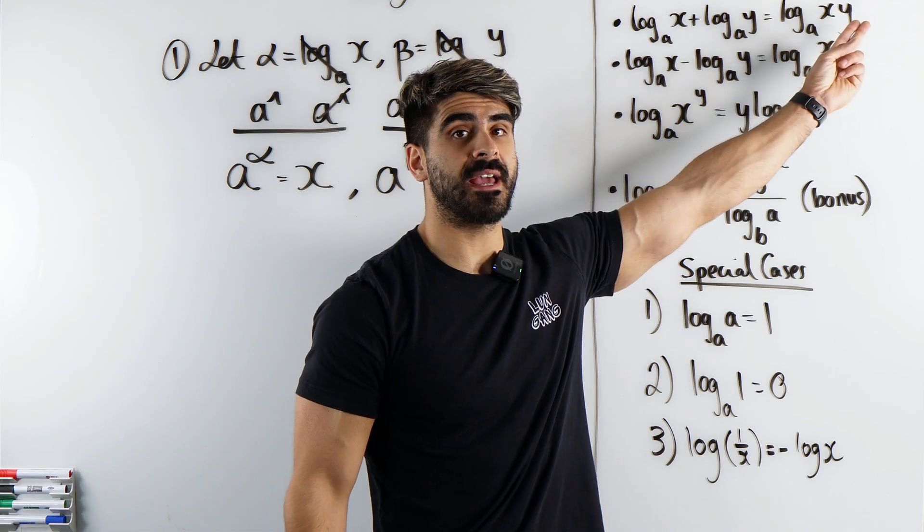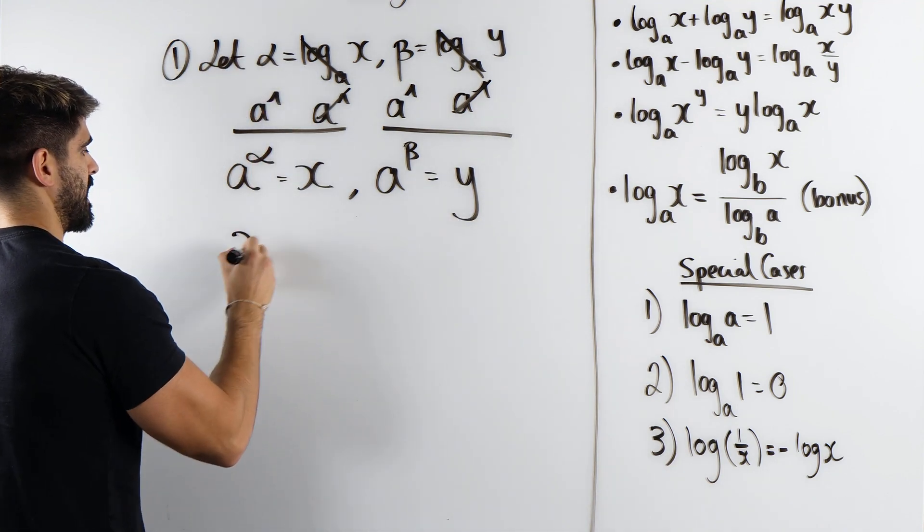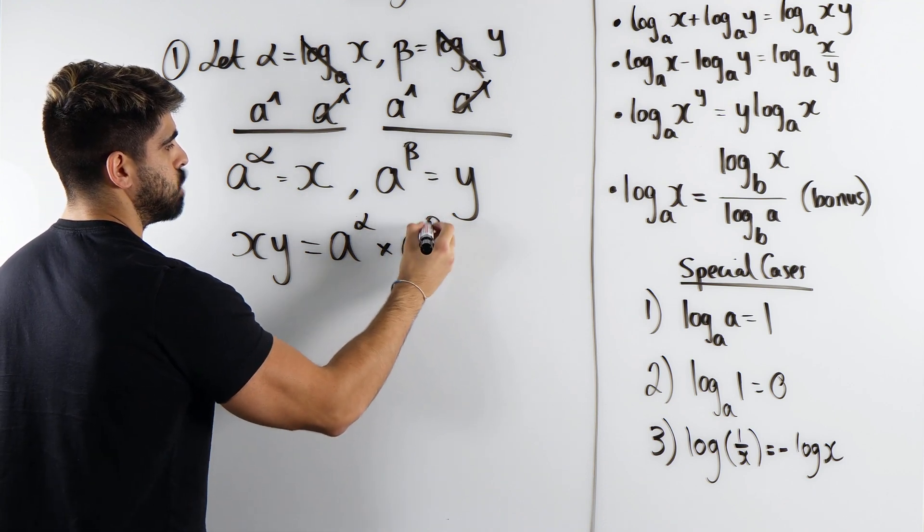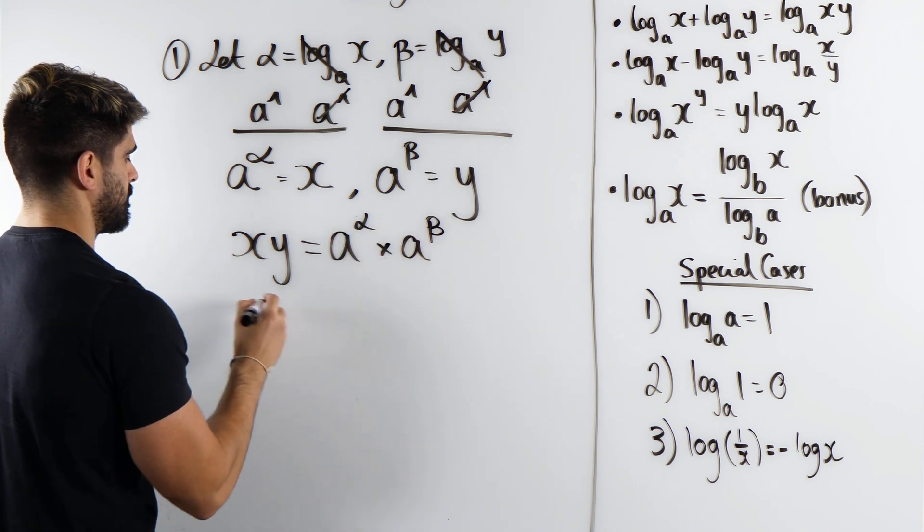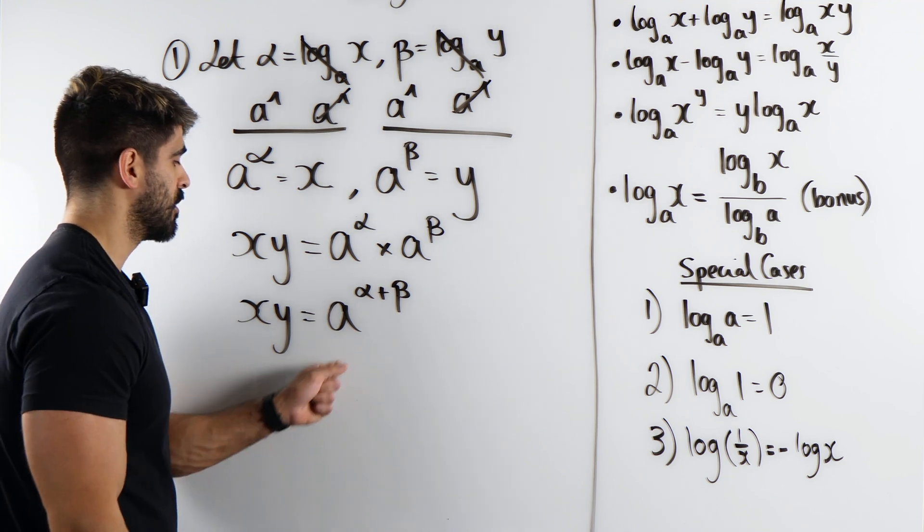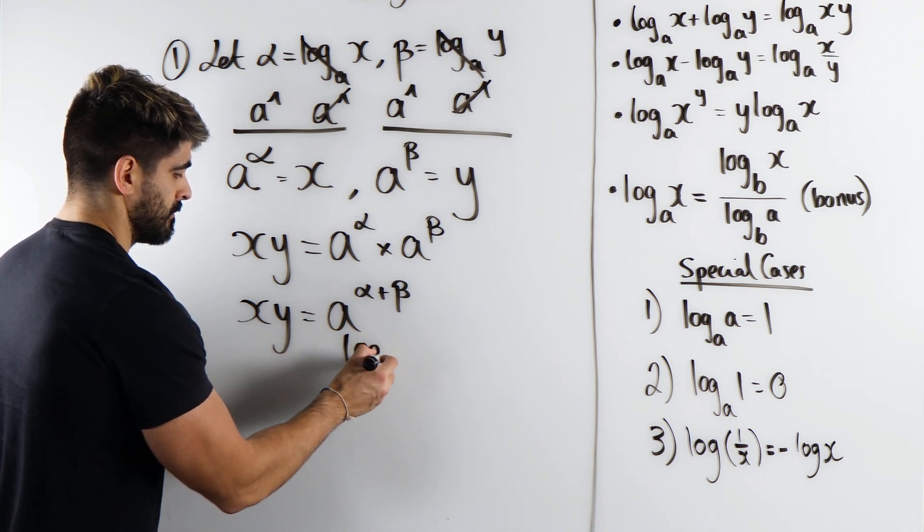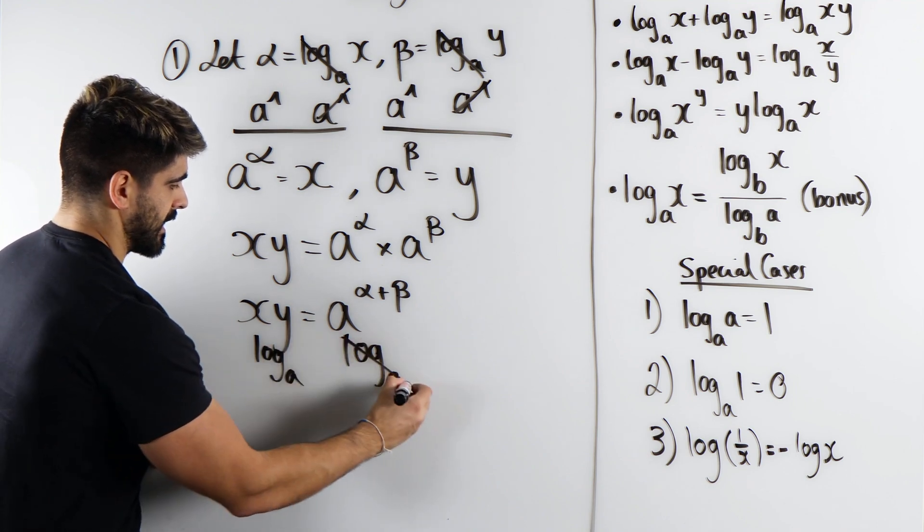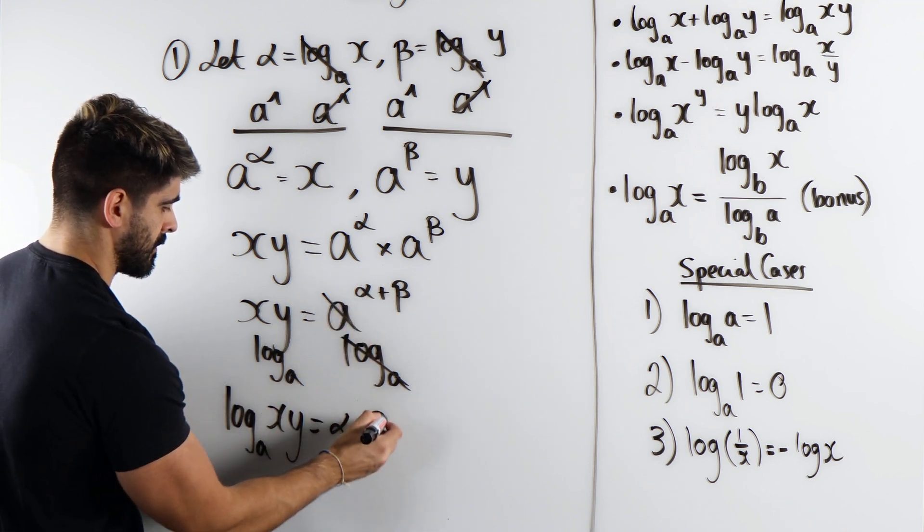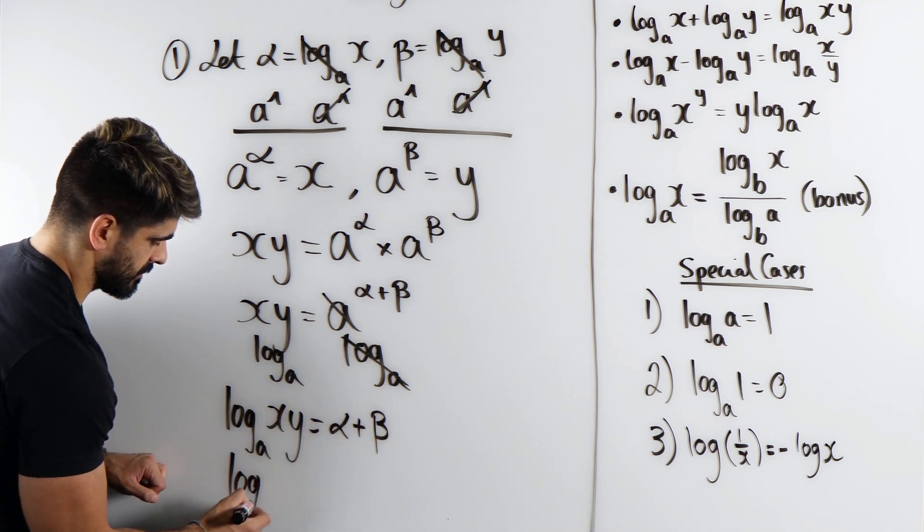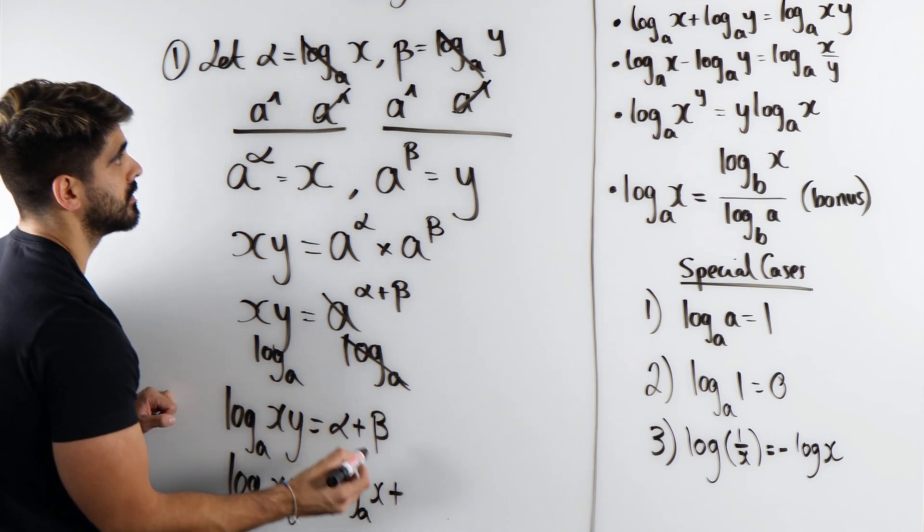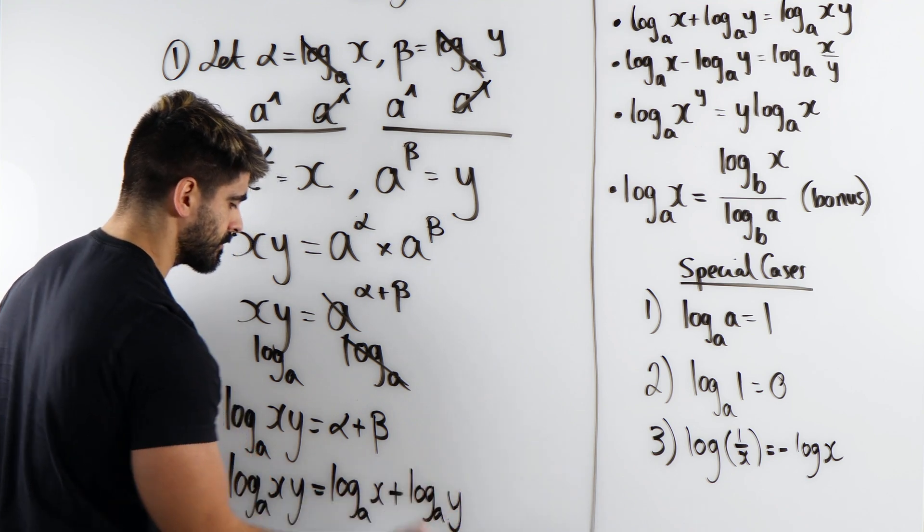Here we're going to have A to the power of alpha is X. Here we'll have A to the power of beta is Y. Now, all I'm going to do is I'm going to form XY by multiplying these together. So we get XY is A to the power of alpha times A to the power of beta. Now when you multiply two numbers with the same base, you add the powers. Now, I'm just going to rewrite this expression back as a log. That cancels. And we get log base A of XY is alpha plus beta. But we know what alpha plus beta is. Alpha is log base A of X, and beta is log base A of Y. And that's proved.